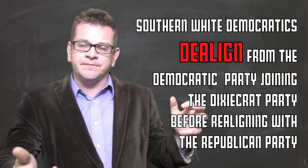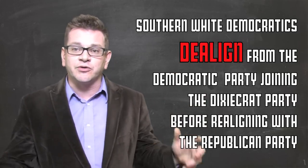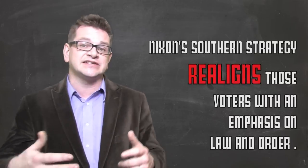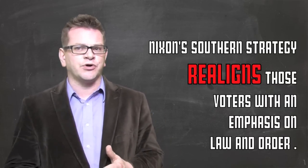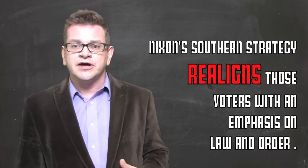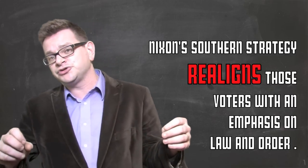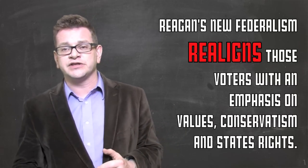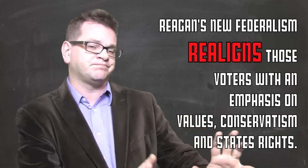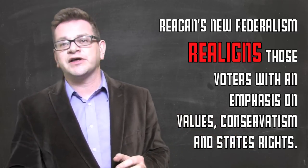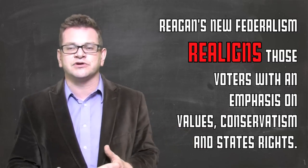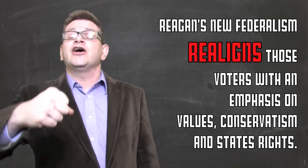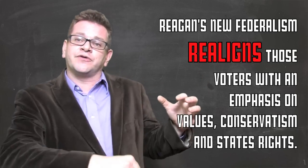Those third parties generally don't do very well for very long — many are single-issue parties or just flashes in the pan. Then around 1968, Richard Nixon runs a law-and-order campaign, putting criminals in jail and giving police the power to do their job. To that white Southern voter, that sounds attractive, so they begin to align with Nixon's silent majority in 1968. But realignment is really complete in 1980, when Ronald Reagan moves the Republican Party toward a values-based platform — talking about abortion, religion, traditional values — and that really realigns that once-Democratic Southern voter to the Republican Party.